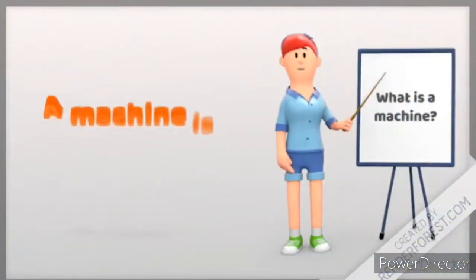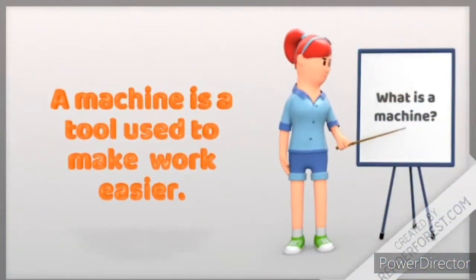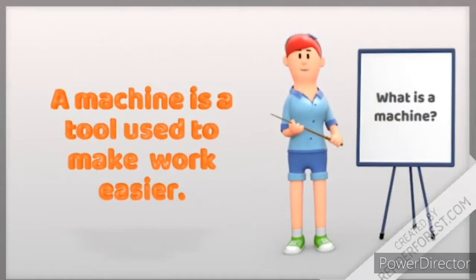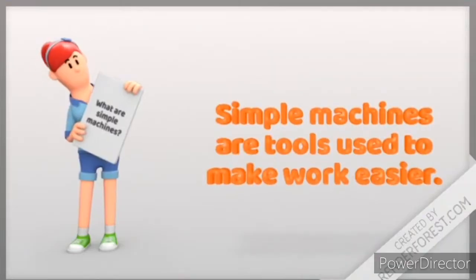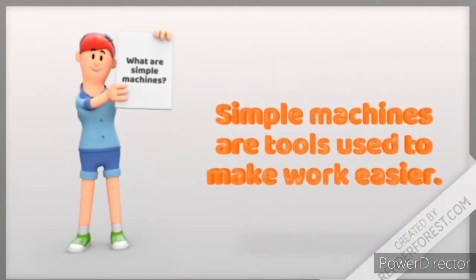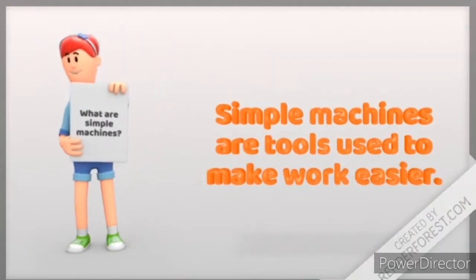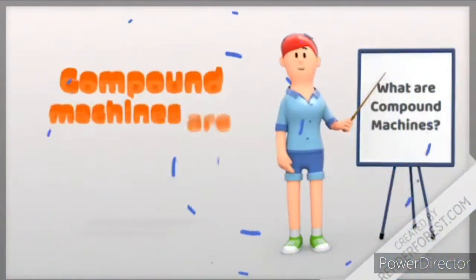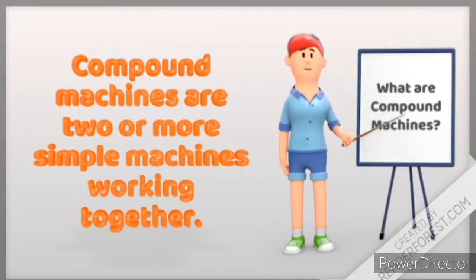To differentiate these two, we need to recognize that a machine is a tool used to make work easier. Simple machines are simple tools used to make work easier, but compound machines have two or more simple machines working together to make work easier.